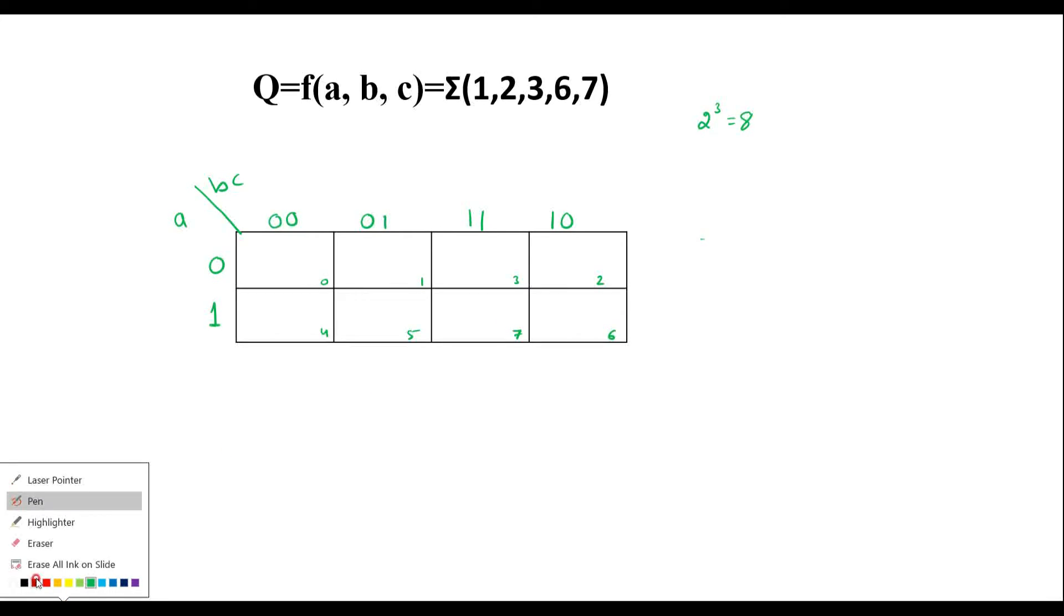Now, let me write the values according to the given function. It is 1, 2, 3, 6, 7. 1, 2, 3, 6, 7. In all other cells, the result is 0.